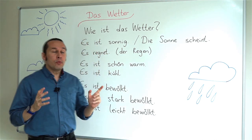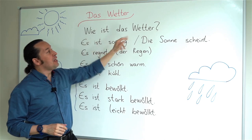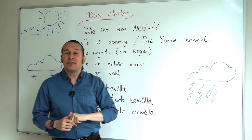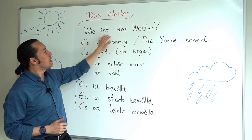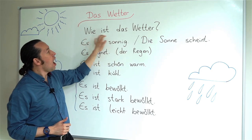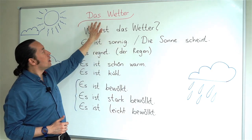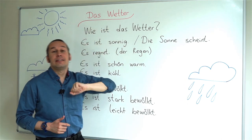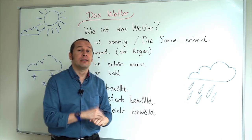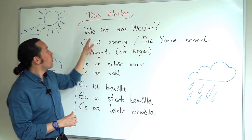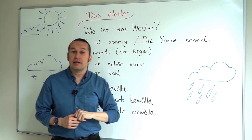In German, when we ask for the weather, we'll say 'Wie ist das Wetter?' — which stands for 'How is the weather?' So, the weather in German is 'Das Wetter,' and if I ask how is the weather, I will ask 'Wie ist das Wetter?'